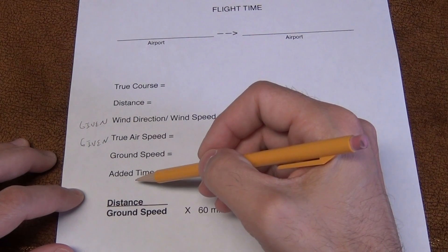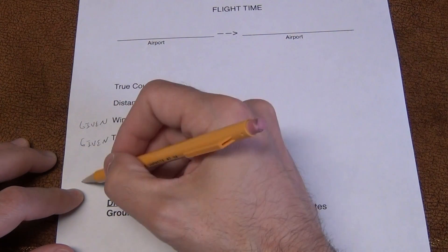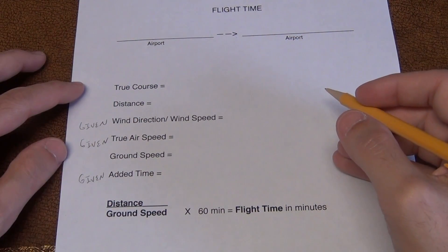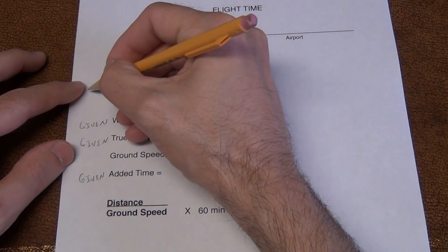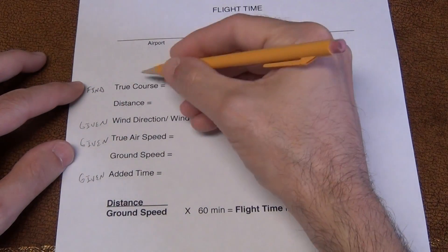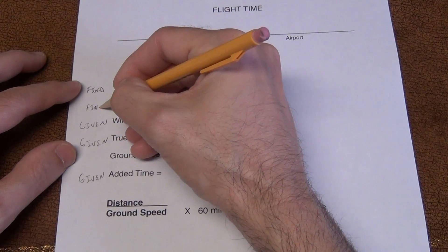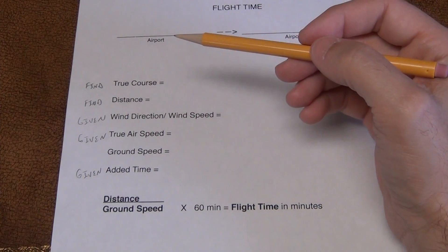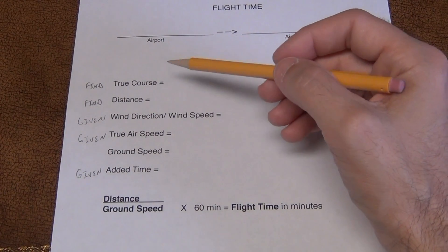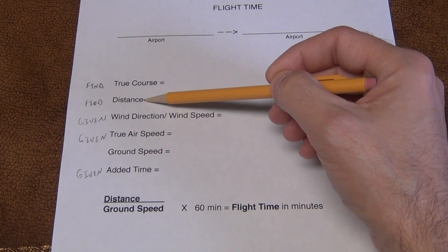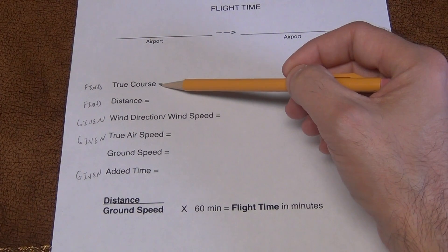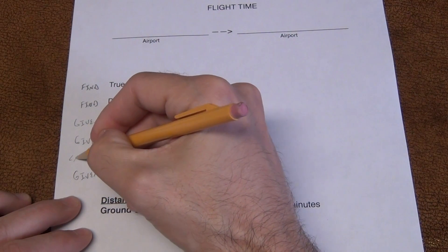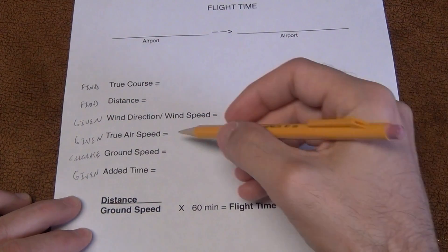Sometimes they also add on time — don't worry about what that is now, you'll understand when we do the questions, but that's also a given if they're adding on time. What you're going to do in every question is find the true course and the distance between the airports. If you saw the introduction on using the navigational plotter, you can see how easy it is to find the distance and true course between airports in degrees.